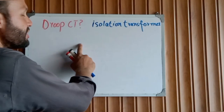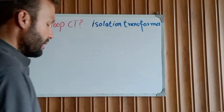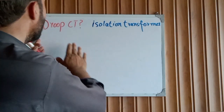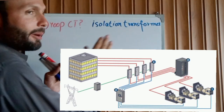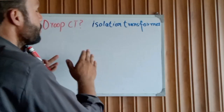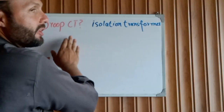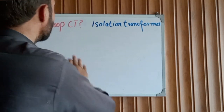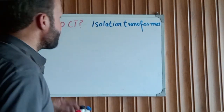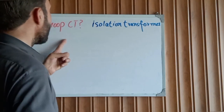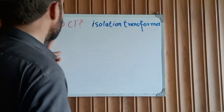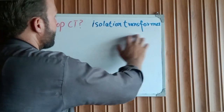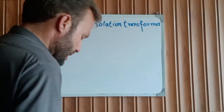Let's get started. First of all, the Drop CT — this current transformer is used in a parallel operation of two or more generators to control the reactive power of the generators. Today we will completely explain the Drop CT working and also the wiring diagram connection, and also explain the isolation transformer.